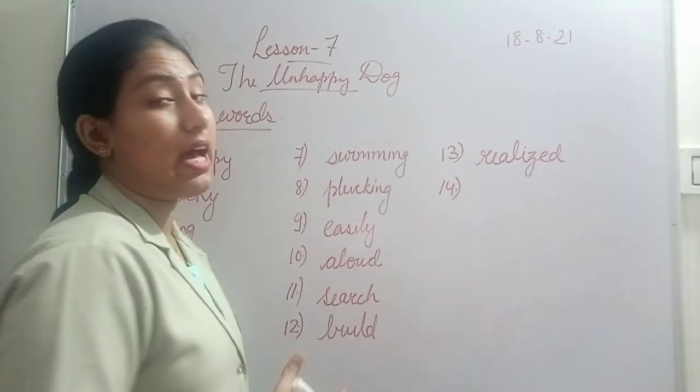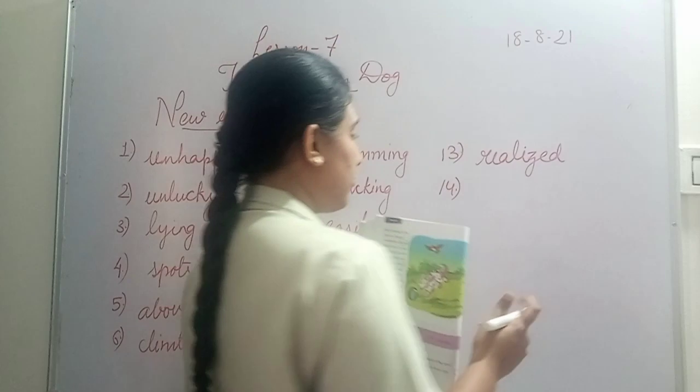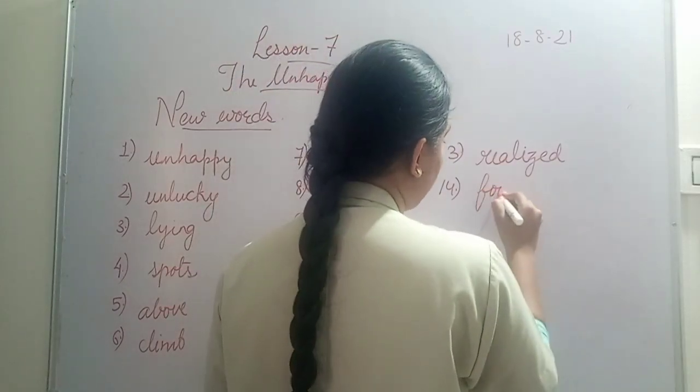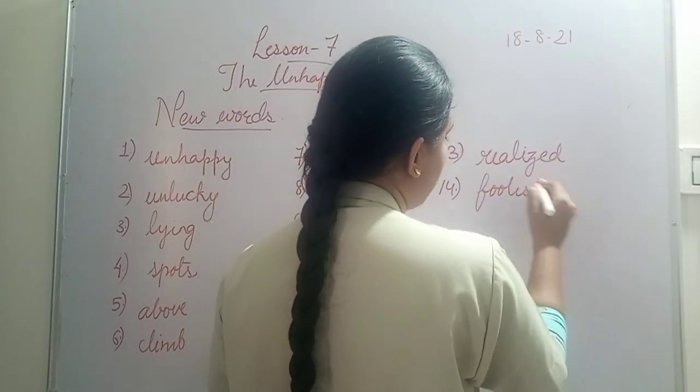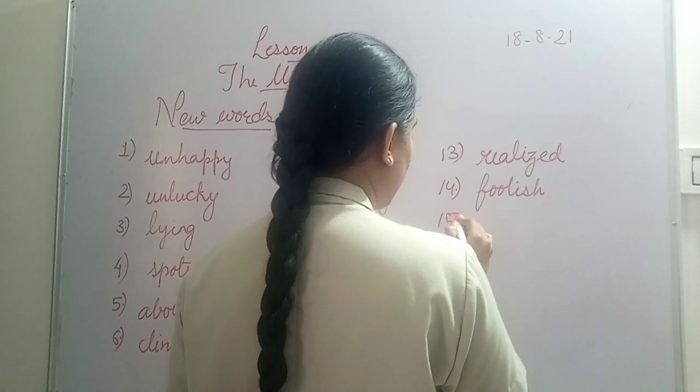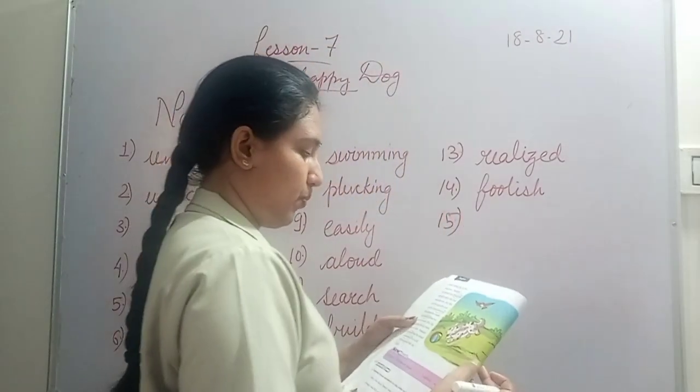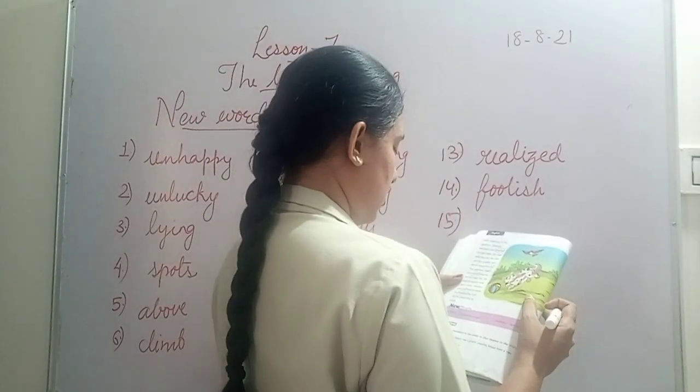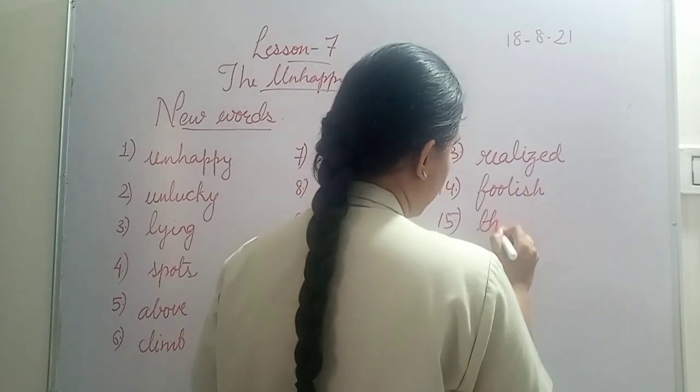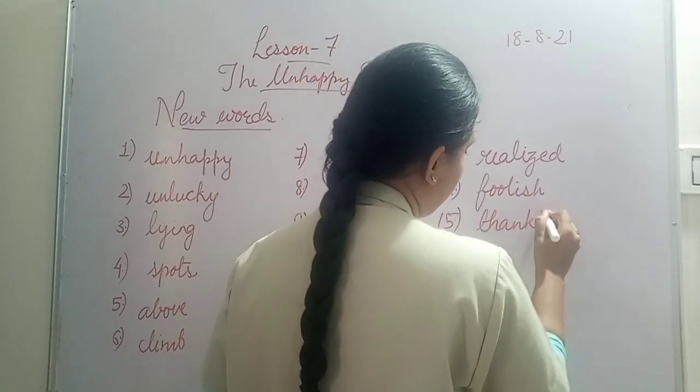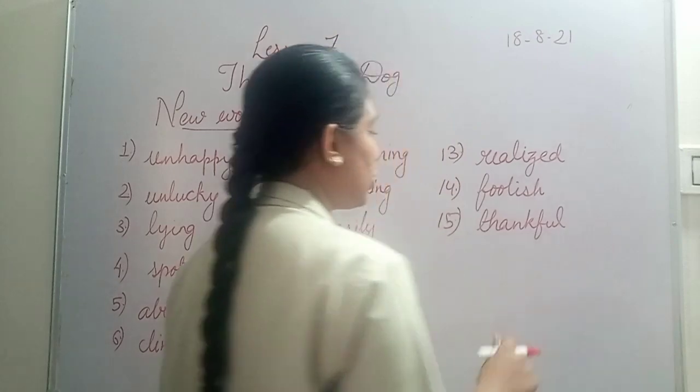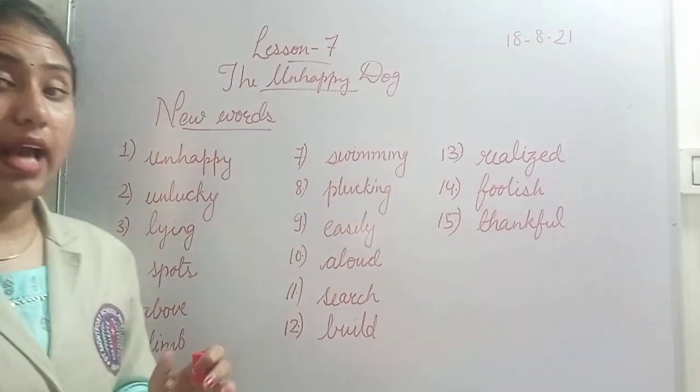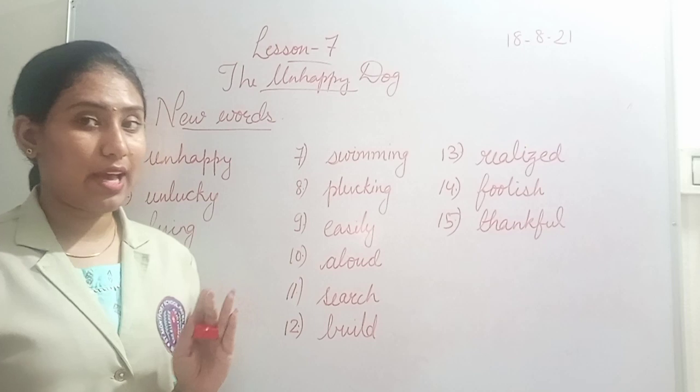Thirteenth word is 'realized,' R-E-A-L-I-Z-E-D. Realized means to understand or become aware of something, like realizing your mistake. Fourteenth word is 'foolish.' Foolish means silly or stupid. Then fifteenth word is 'handful.'